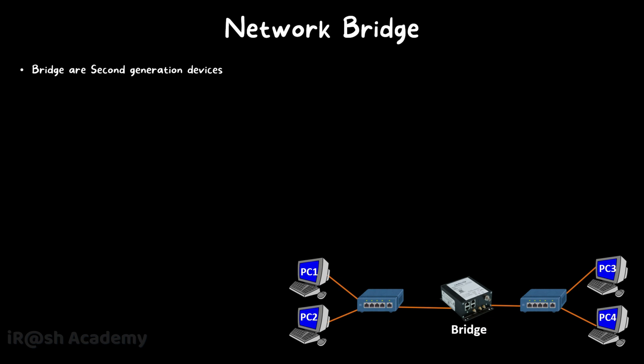Now let's talk about some features of network bridges. Bridges are second-generation devices — network hubs were the first generation. When Ethernet was first introduced, network hubs were globally used to connect multiple devices. After the first generation of hubs, bridges became the second-generation devices. The main function of a network bridge is to divide a single collision domain into multiple collision domains, connecting multiple LANs together as a single LAN.